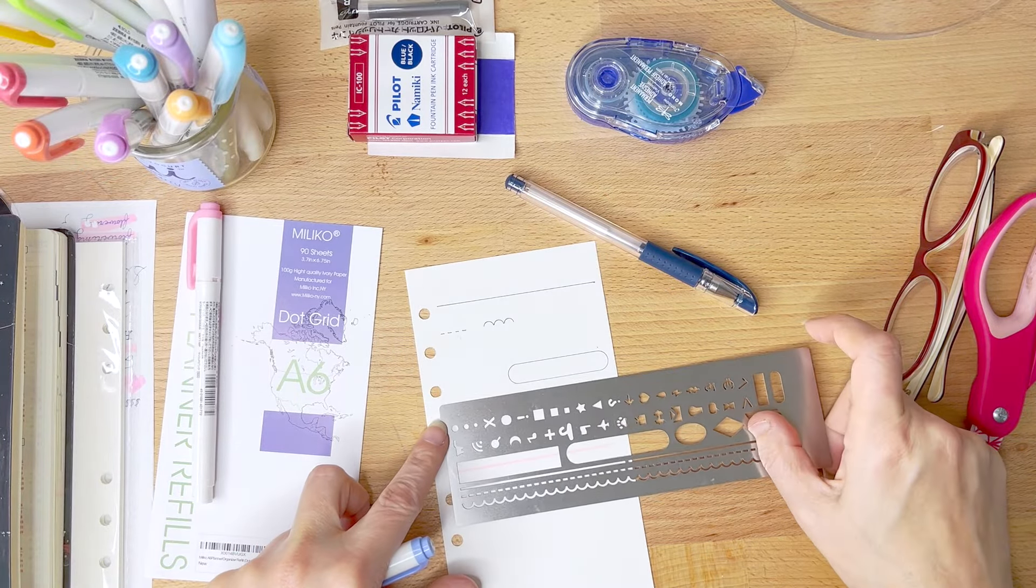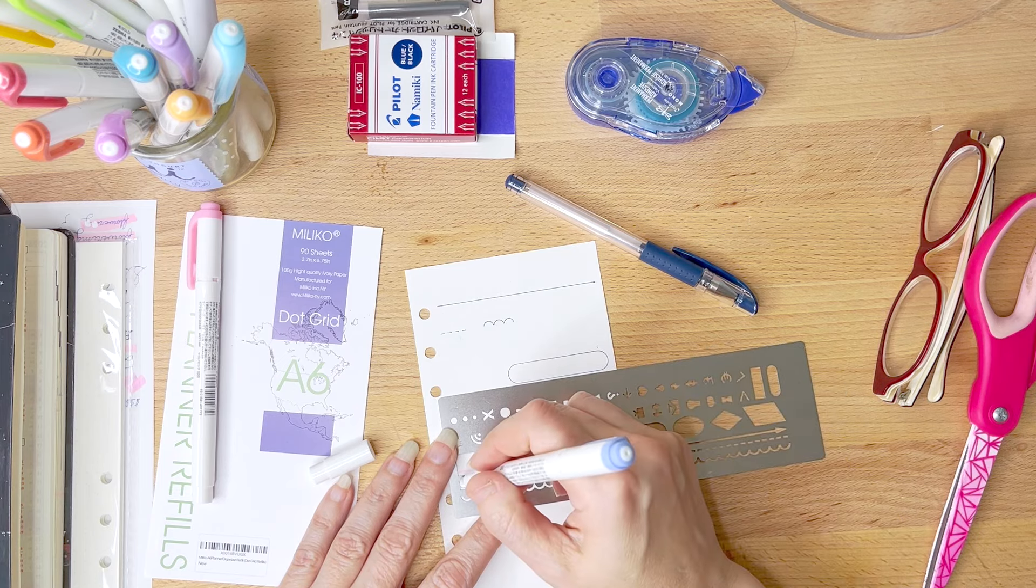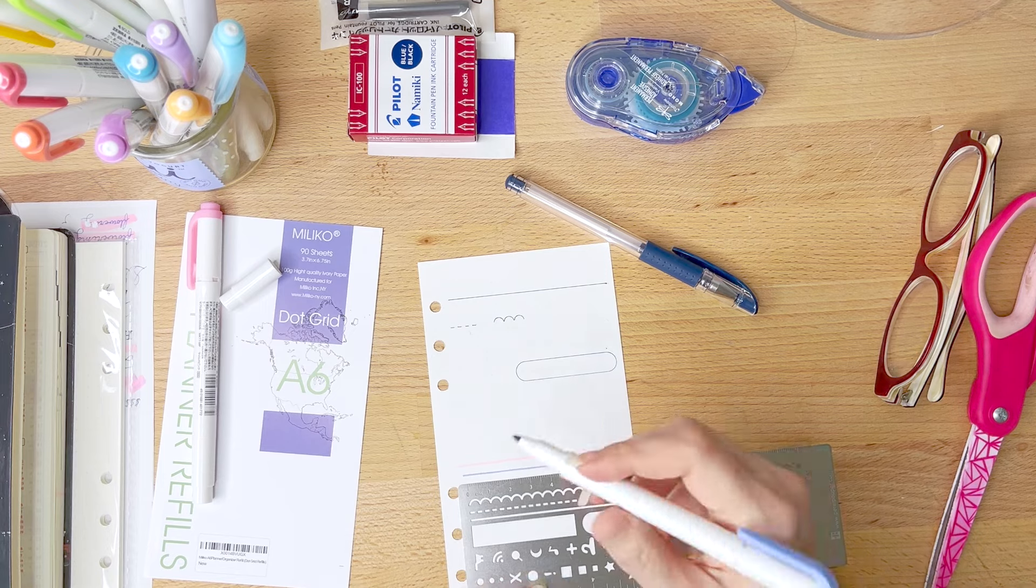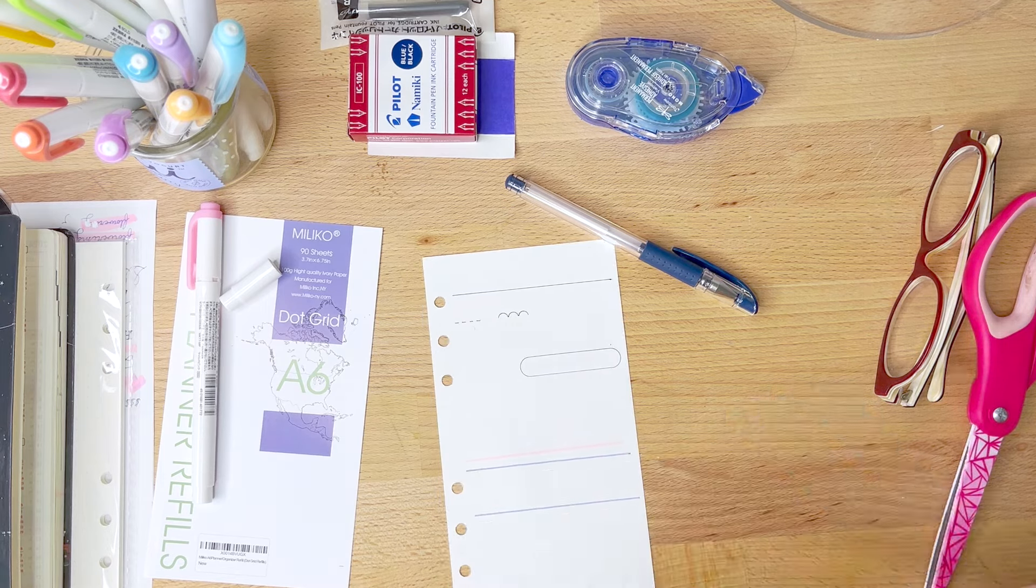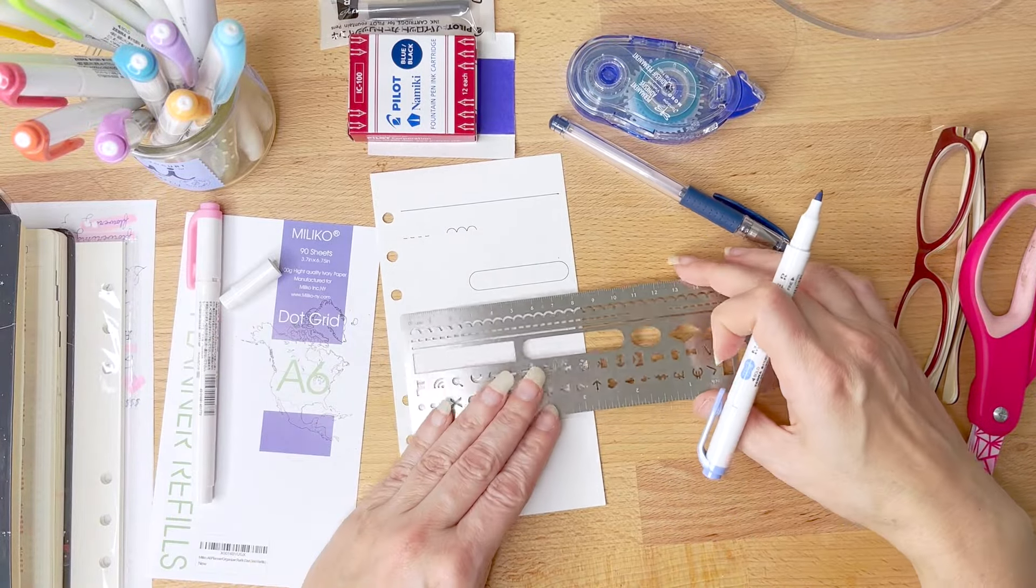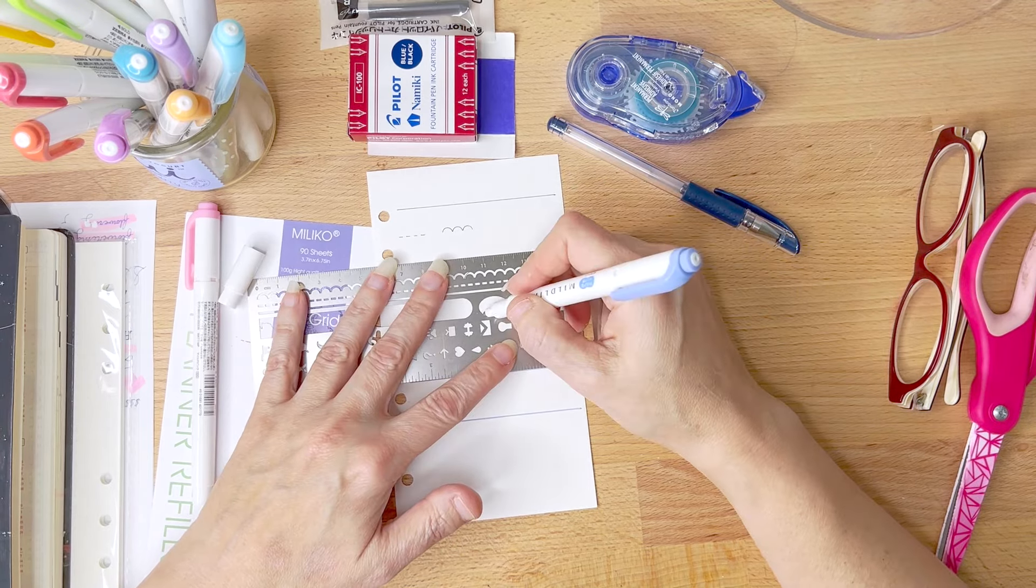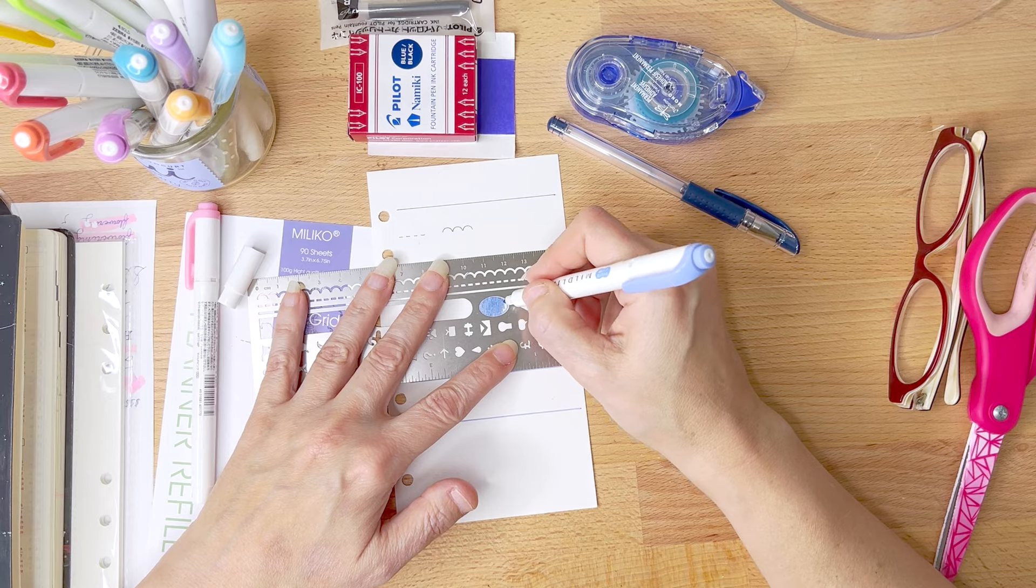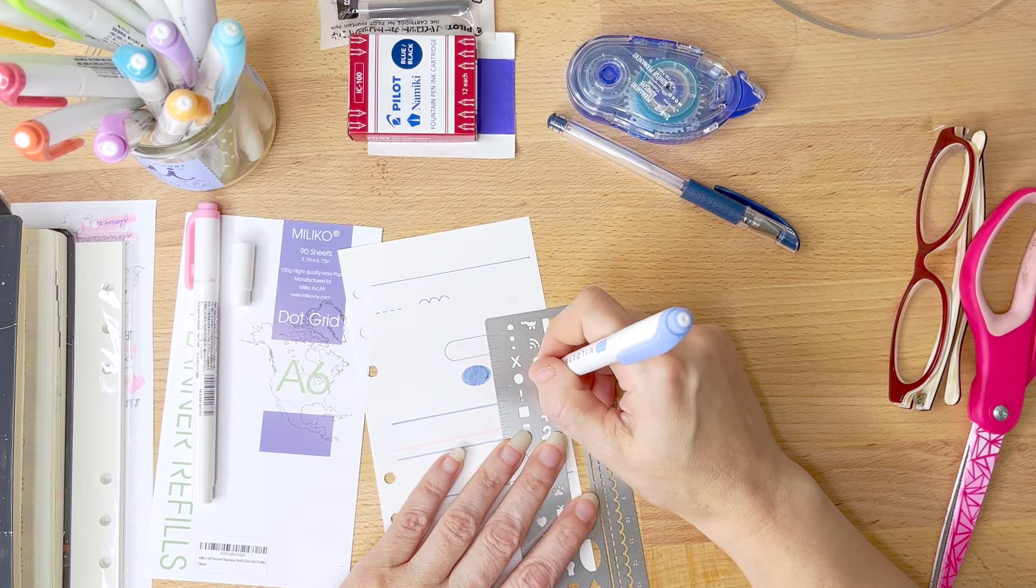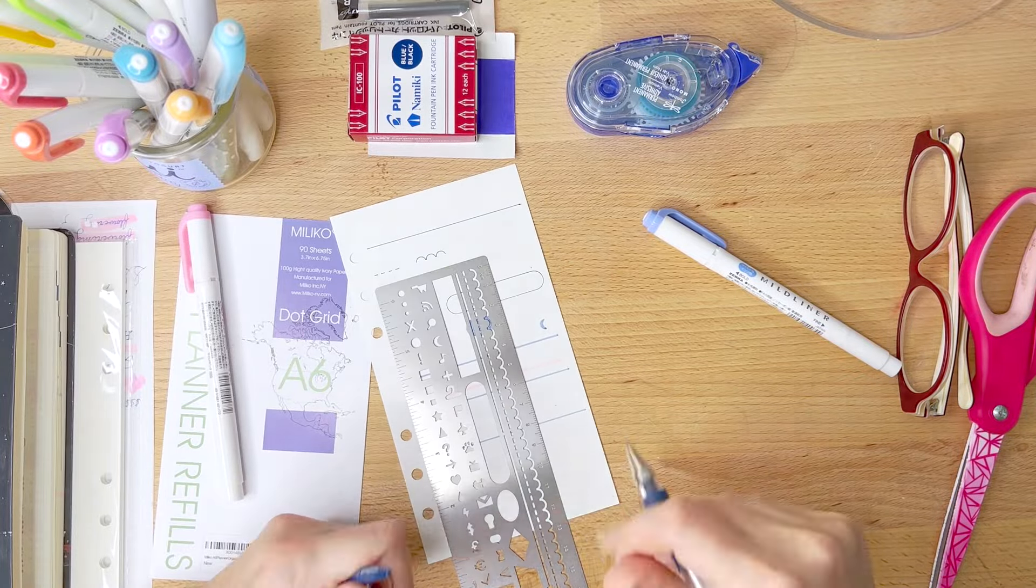Now the big test here is trying out the stencil with the mild liners on the Maliko paper. And voila, you can see that it makes a nice straight line without any bleed. And here is a little close-up footage of this before I do some more extensive testing with the stencil. I decided to try out a couple of the larger stencil areas like this oval here, and it worked out well as well. There's no bleed there, and there was no marker ink on the back of the stencil bookmark. I decided to try a few of the smaller things, which, you know, it's a little difficult to fit the mild liner tip in there, but it works.